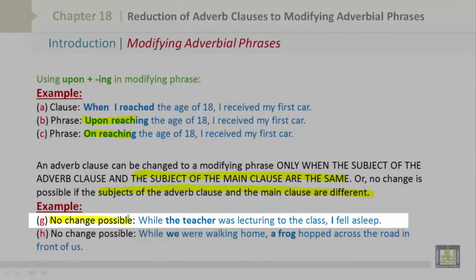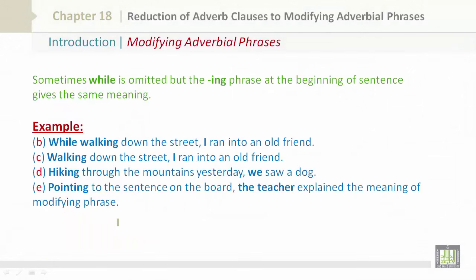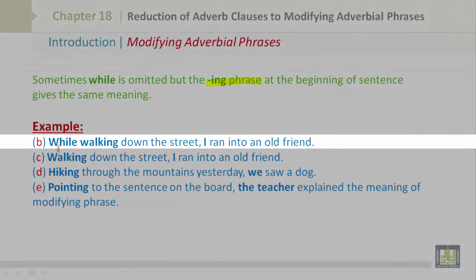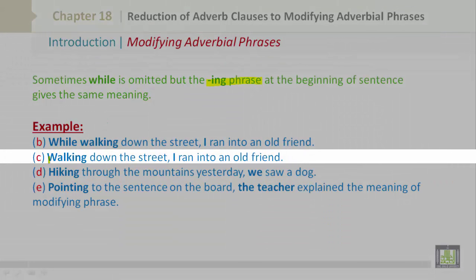Examples where no change is possible: 'While the teacher was lecturing to class, I fell asleep' — no change possible. 'While we were walking at home, a frog hopped across the road in front of us' — no change possible. Sometimes 'while' is omitted, but the -ing phrase at the beginning of the sentence gives the same meaning. For example: 'While walking down the street, I ran into an old friend' gives the same meaning as 'Walking down the street, I ran into an old friend.'